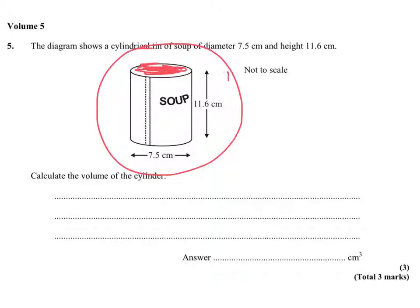and then times it by the height or the length, whichever you want to call it. So area of a circle is pi times radius,